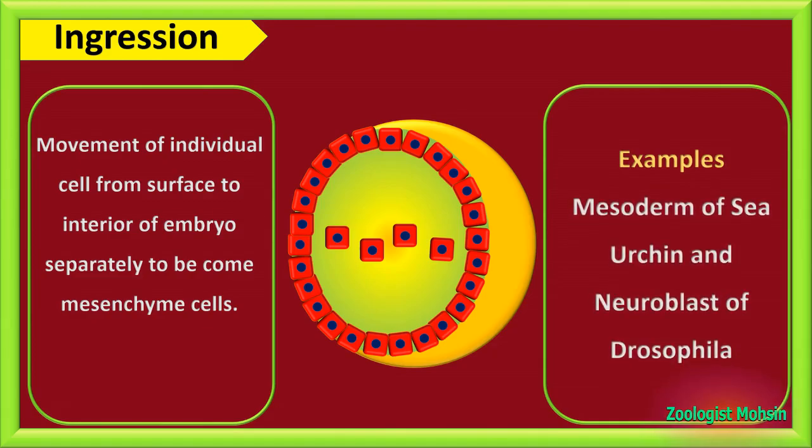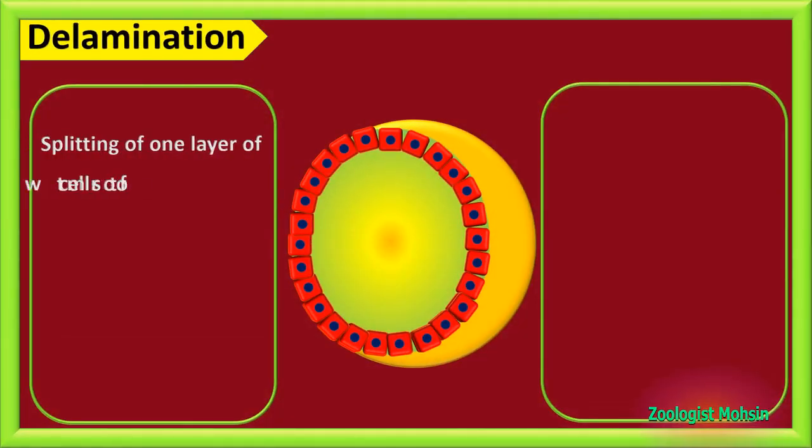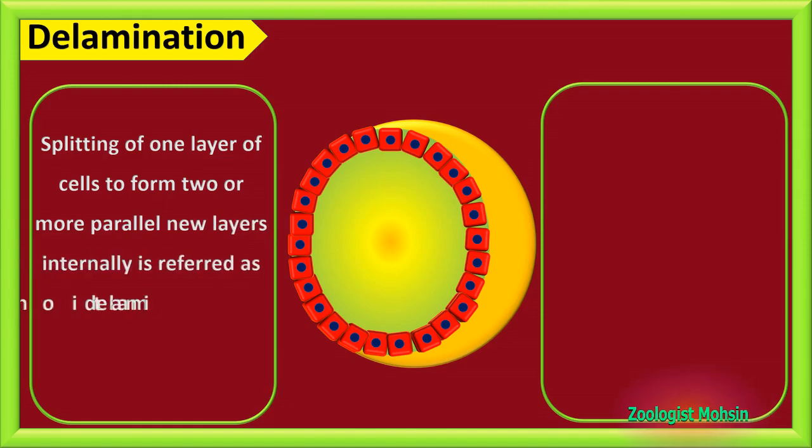Examples of such movements involve mesoderm of sea urchin and neuroblast of Drosophila.